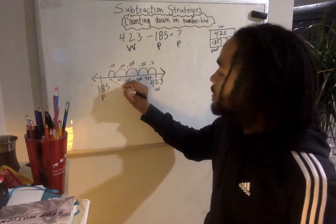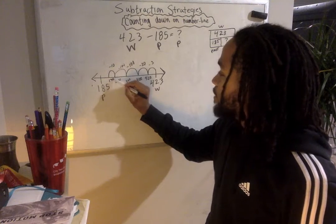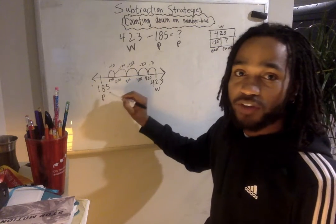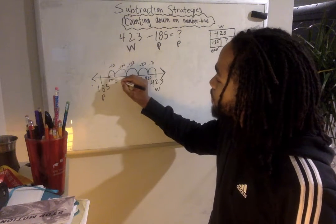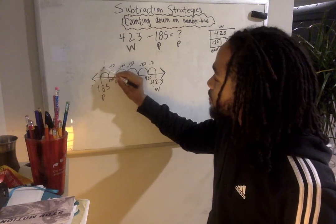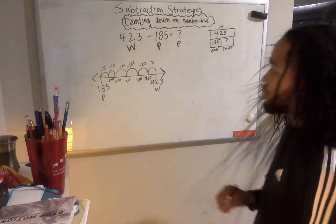200 minus 10, 190. I'm getting even closer to 185. Then I'm going to subtract a 5. And now I'm at exactly 185.